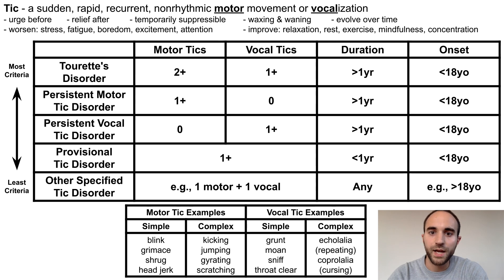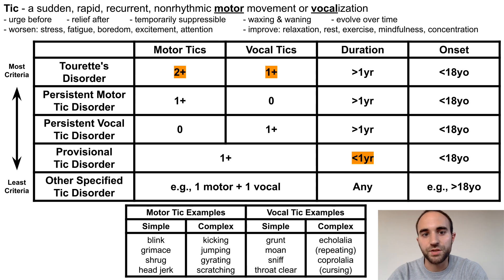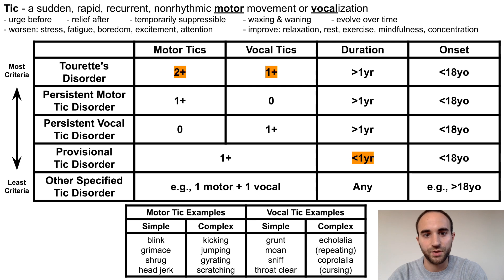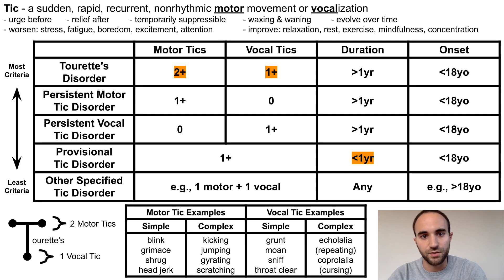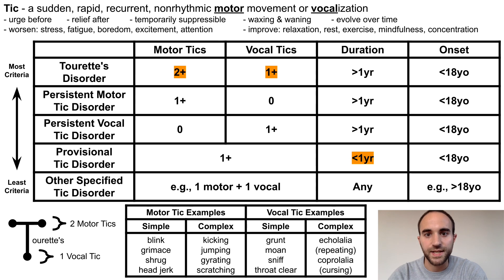Let me conclude by pointing out a couple details that may help you memorize these criteria. The most useful criteria to remember are that Tourette's disorder requires two motor ticks and one vocal tick, and that provisional tick disorder is distinguished by having ticks for less than one year. Another tool is visualizing the T in Tourette's, where the two dots at the top of the T represent the two motor ticks, and the dot at the bottom of the T represents the one vocal tick. That's the end of this talk — I hope this simplification makes it easy to remember the tick disorders. Thank you.